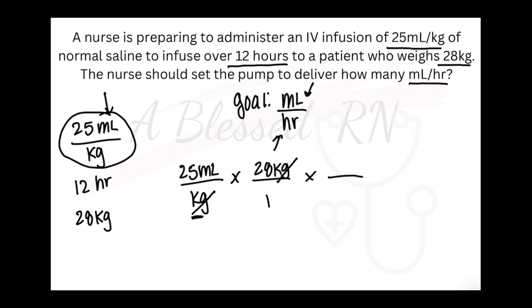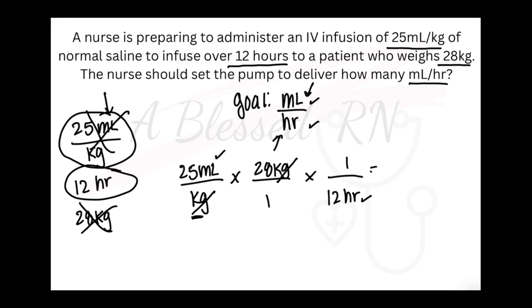We have one puzzle piece left, which is our 12 hours. Our goal tells us that hours need to go on the bottom, so I will place my 12 hours on the bottom. I'll put my placeholder — that's a one on the top. And you see, we've got milliliters at the top and hours at the bottom. So our goal is achieved.